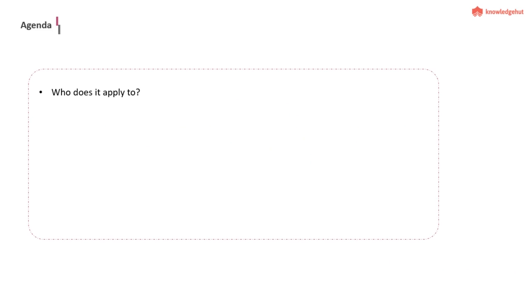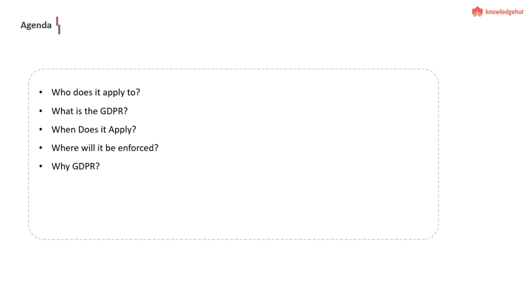Within the GDPR, we start by talking about who it actually applies to — answers that might be surprising to some of you. What is the GDPR? When does it apply? Where will enforcement take place? Why do we have a GDPR? Then I'll move on to a project approach suggestion and cover an actual project example involving data protection rules. Lastly, we'll close with questions and answers.